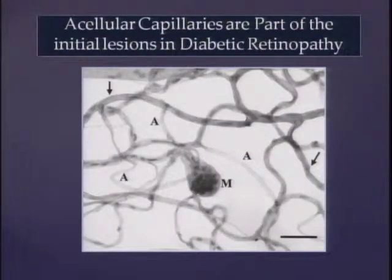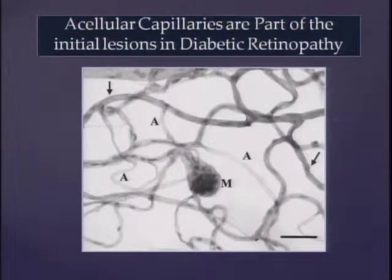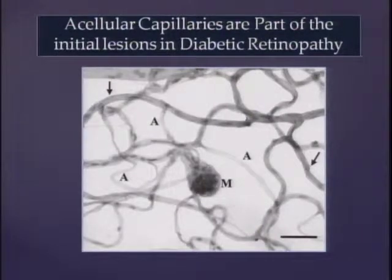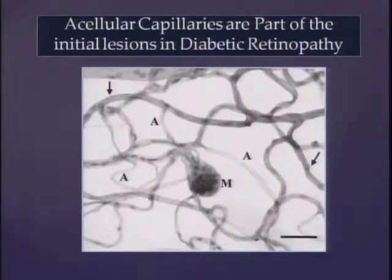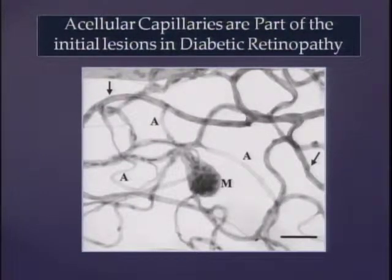In diabetic retinopathy, one of the earliest changes you can see in humans as well as in animal models is acellular capillaries. Capillaries in the retina become acellular — that means their cells, endothelial cells and pericytes, die of apoptosis. So this retina becomes ischemic, which leads to further complications. We are trying to study how retinal capillary endothelial cells and pericytes die in diabetes.